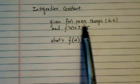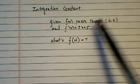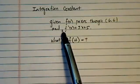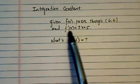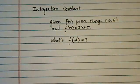We're given a function that passes through point (6, 6), which is a clue. We're given that tangent slope to the function is 5x plus 5, which is really saying the derivative is 5x plus 5.